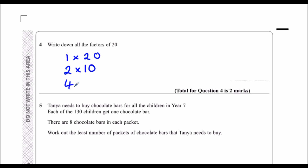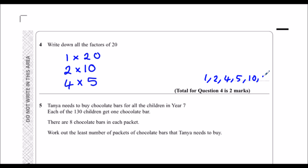But it is in the four times table — it's 4 times 5. Now if I try 5, I'll go back to 4, so these must be all of the factors. I'm just going to write them out: 1, 2, 4, 5, 10, and 20.